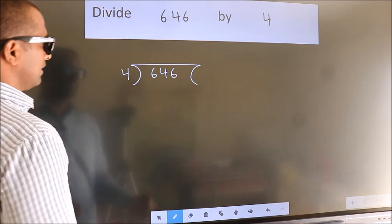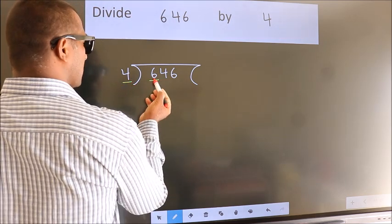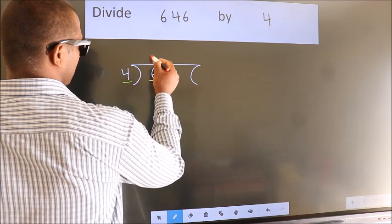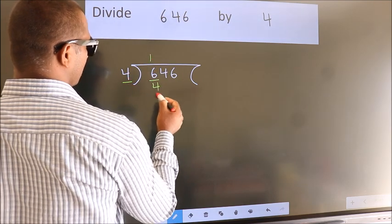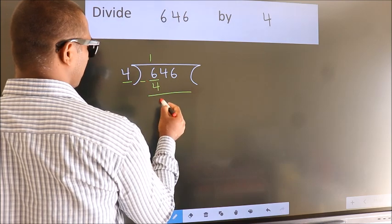Next. Here we have 6, here 4. A number close to 6 in the 4 table is 4 once 4. Now we should subtract. We get 2.